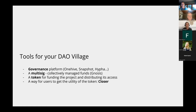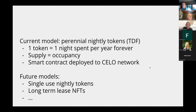Then you want to have a multi-sig — Gnosis is kind of a standard, though within Hifi you might have that built in. Now, when it gets interesting is once you want to launch your token. Once you create your token, you want to create some kind of tokenomics around it. We're in the process of drafting the white paper for TDF — trying to describe what the token means. In our case, it's a utility token that gives you access to the space. We're creating Closer in order to build the tech stack that's going to provide utility to that token. The model we're developing is a perennial nightly token — one token is one night's stay on the property in basic accommodation.